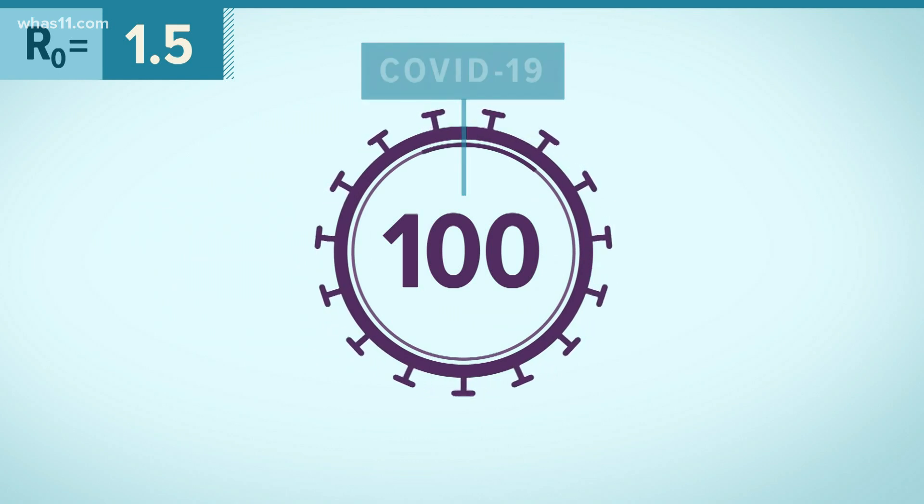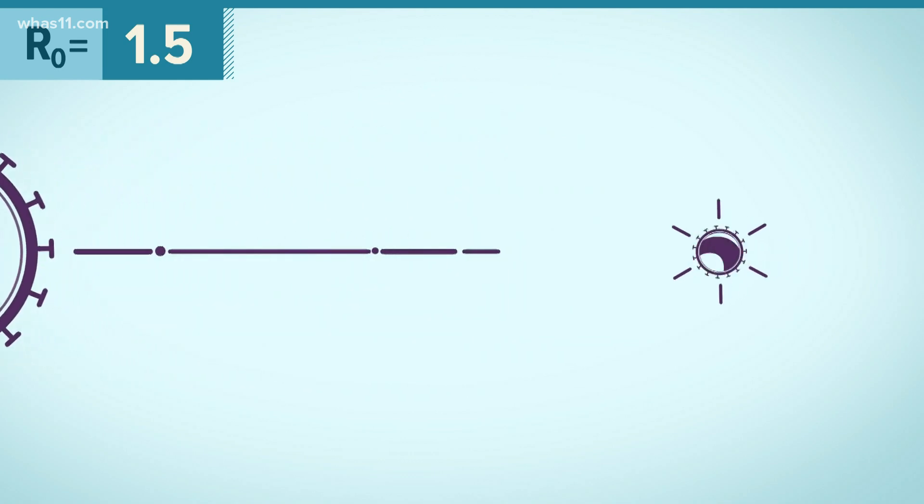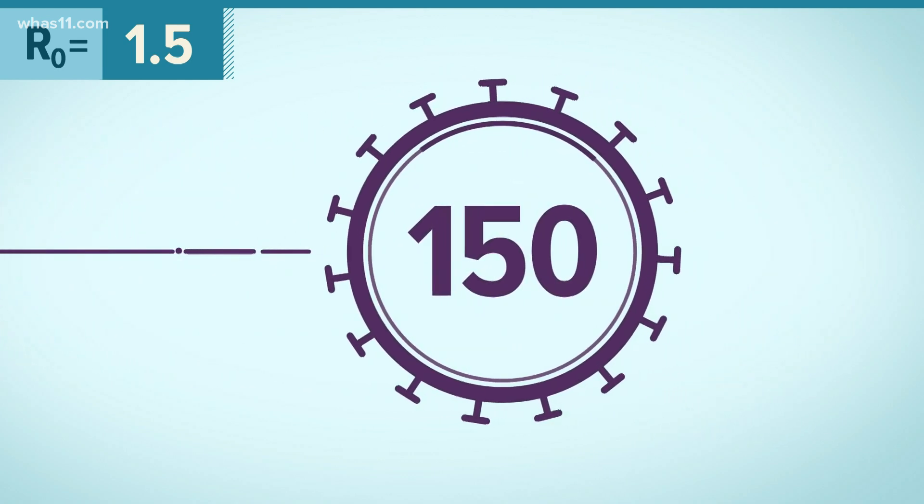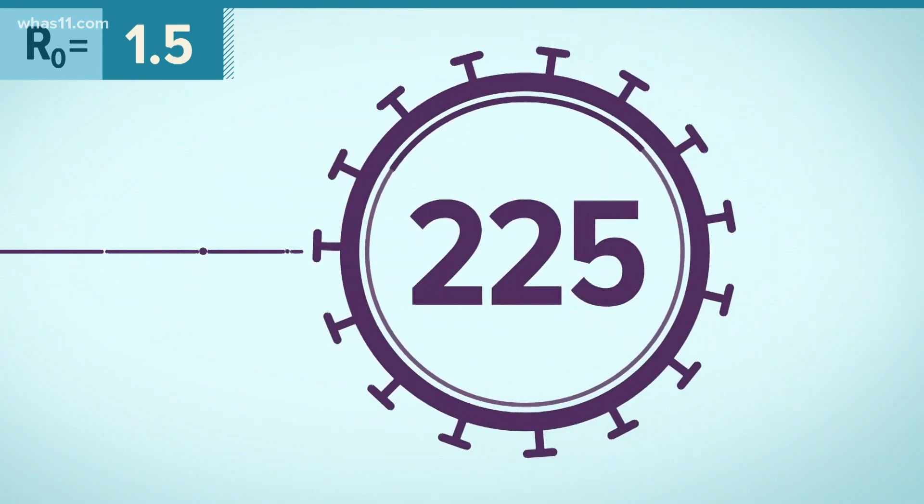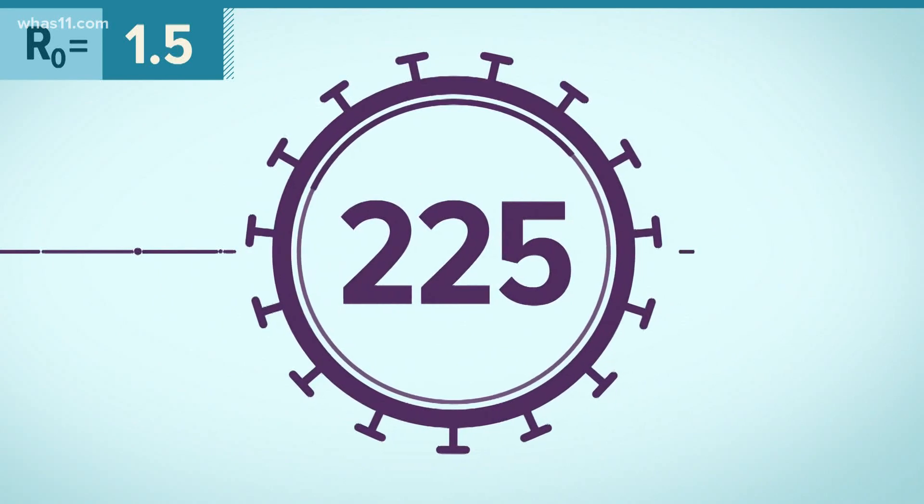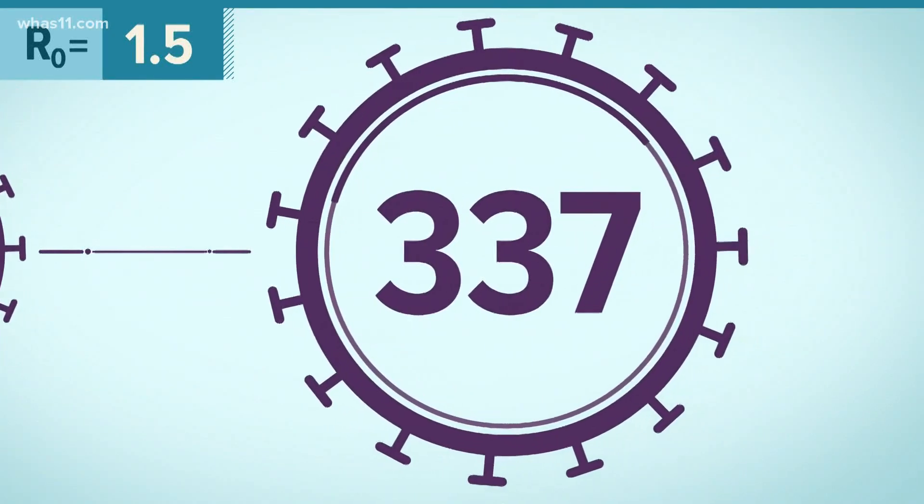Then each of those 150 would infect one and a half others. So now 225 more people are infected. That group infects another 337.